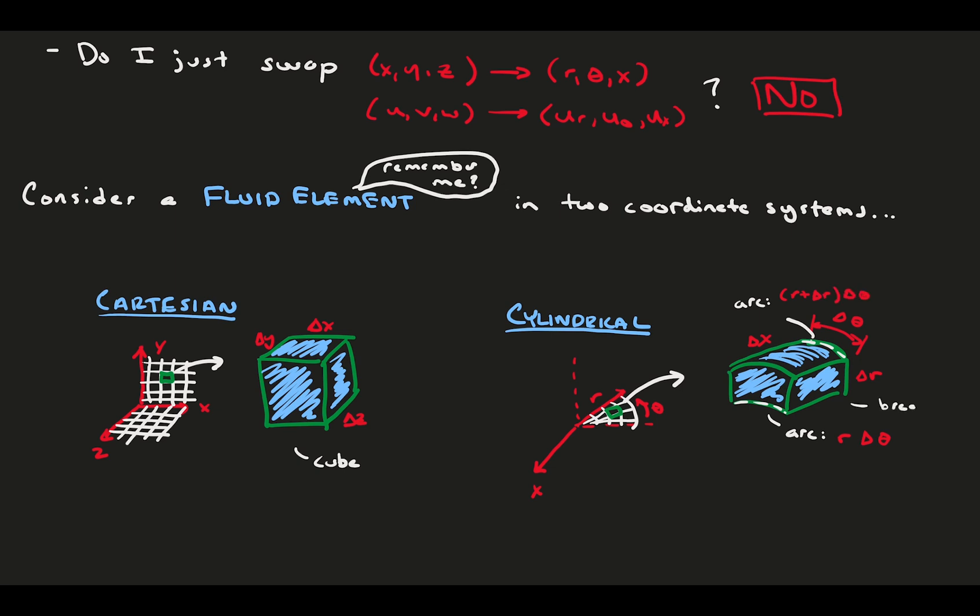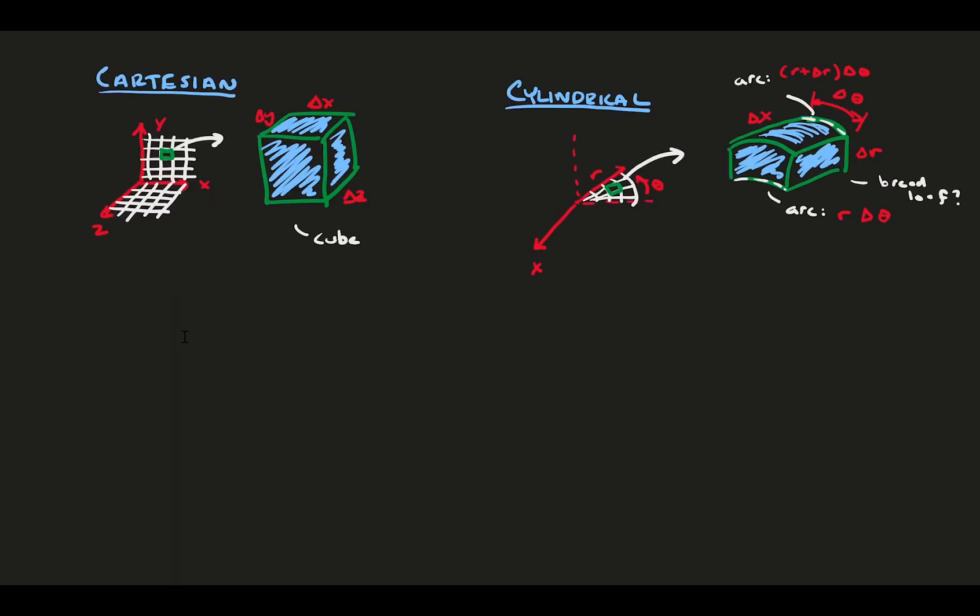If in Cartesian coordinates we had a cube, in cylindrical coordinates we have a bread loaf. Notice that the top and bottom of our shape have slightly different arc lengths, and thus that means they have slightly different areas. This is going to make things a bit messy.